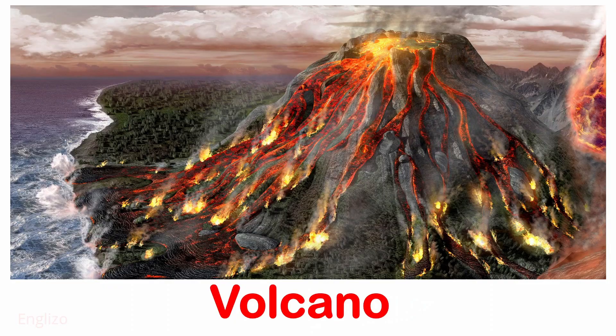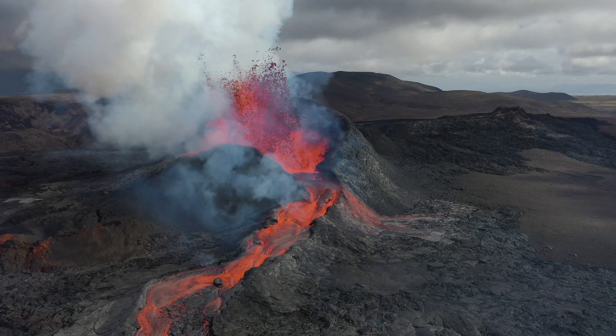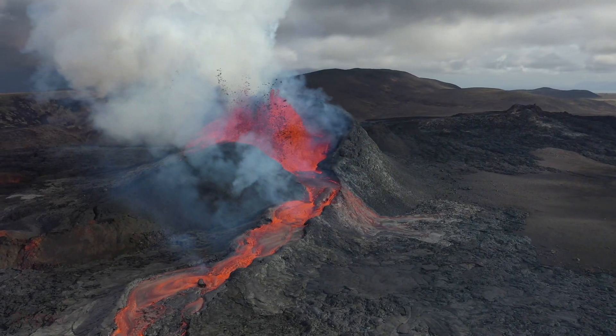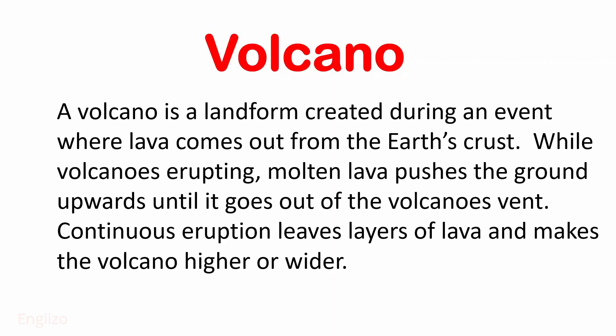Next is Volcano. A volcano is a landform created during an event where lava comes out from the earth's crust. While a volcano is erupting, molten lava pushes the ground upwards until it goes out of the volcano's vent. Continuous eruption leaves layers of lava and makes the volcano higher or wider.